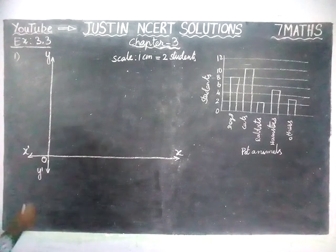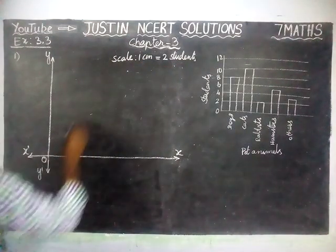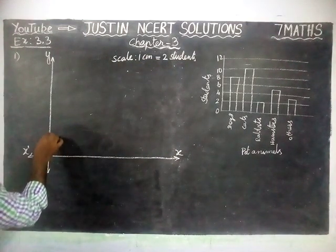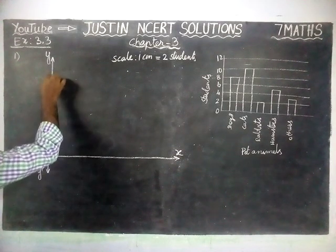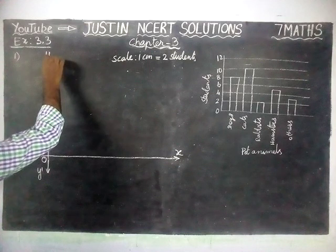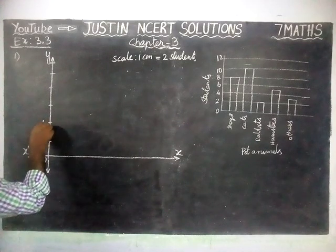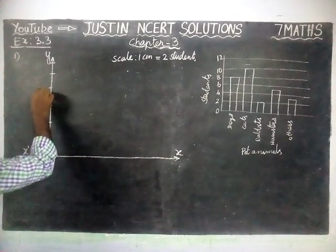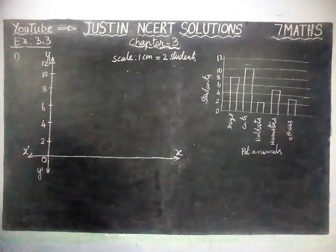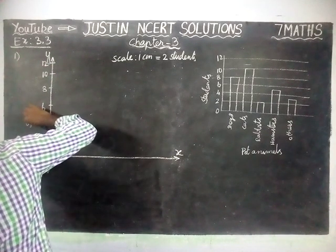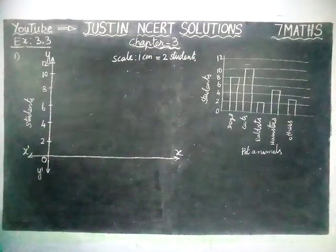We are going to mark the y-axis where 1 cm is equal to 2 students. We will take it here: 2, 4, 6, 8, 10, and 12. This y-axis we are going to label as students, and in the x-axis we are going to take it as pet animals.